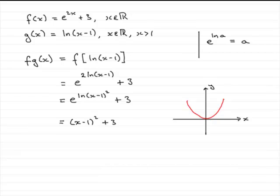So if I was to translate this graph one unit to the right, it's going to go like that. This point here would be at 1. Then I have add 3, and that means this graph goes up by 3 units. So let's just imagine that's being pushed up by 3 units.